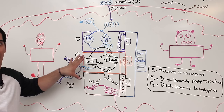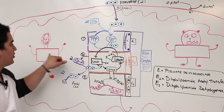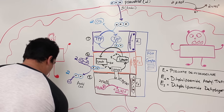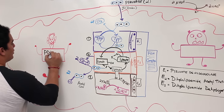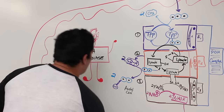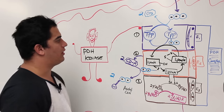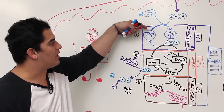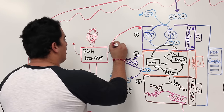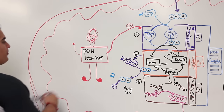This enzyme complex is heavily regulated. Enzyme one is the main point of regulation. The enzyme pyruvate dehydrogenase kinase controls its activity — it places a phosphate onto the enzyme one complex, which inhibits it. When enzyme one is inhibited, this entire pathway cannot occur.